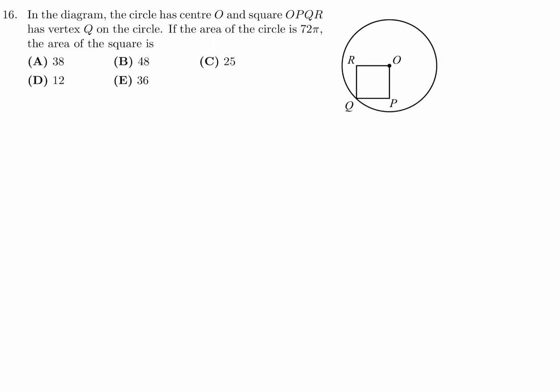In the diagram, the circle has center O, and square OPQR has vertex Q on the circle. If the area of the circle is 72π, the area of the square is? Let's draw one line from the center to Q, and I think that should be sufficient. I'll call that R for radius, because it is the radius. The area of the circle is πR squared, and they told me that's 72π. So that means R squared is equal to 72.